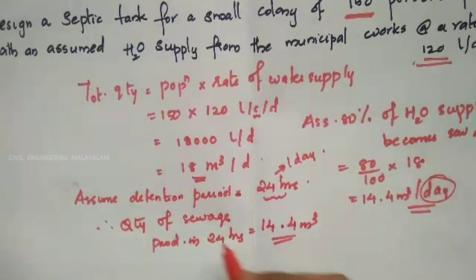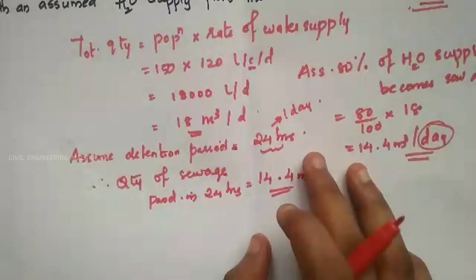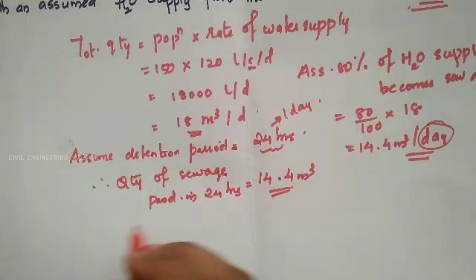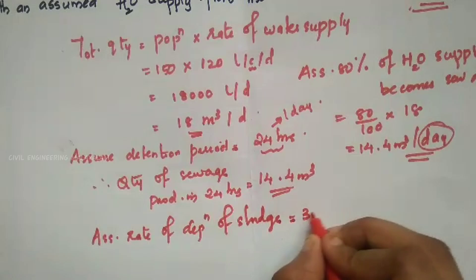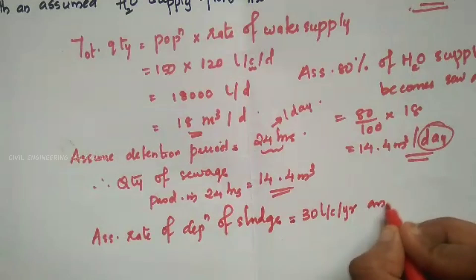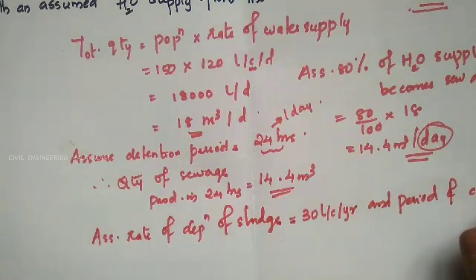The next step is to assume the rate of deposition of sludge. We assume the rate of deposition of sludge, and the design concentration is equal to 30 litres per capita per year.